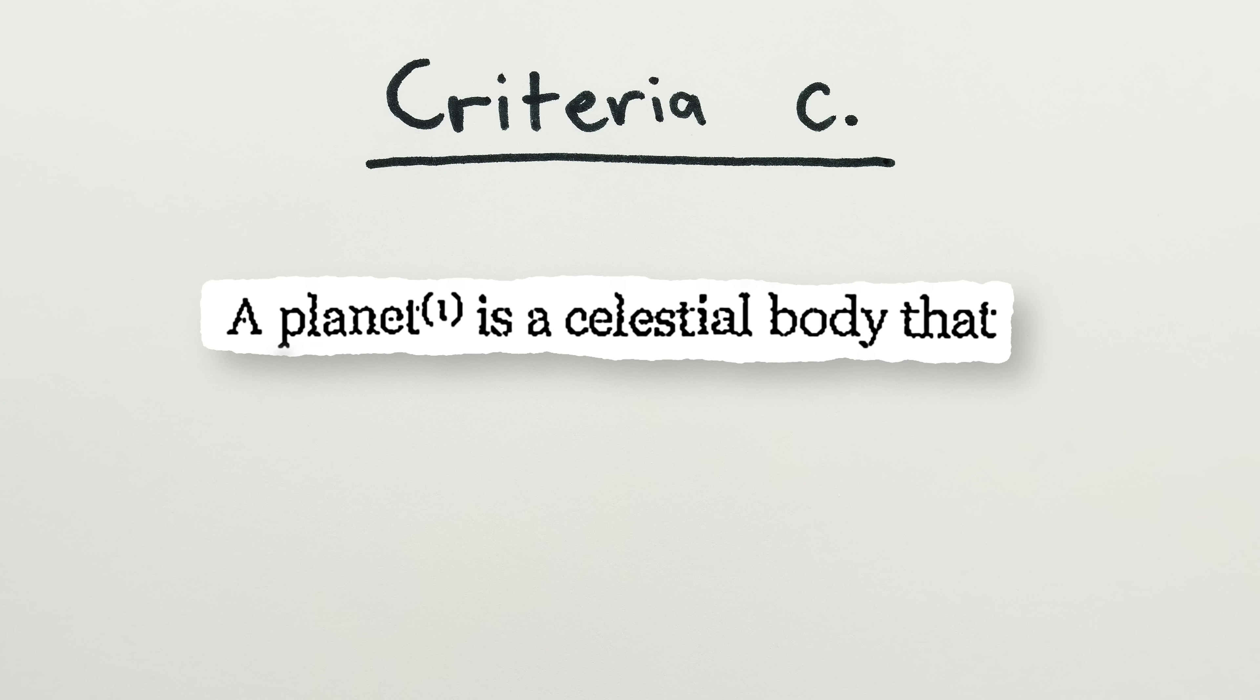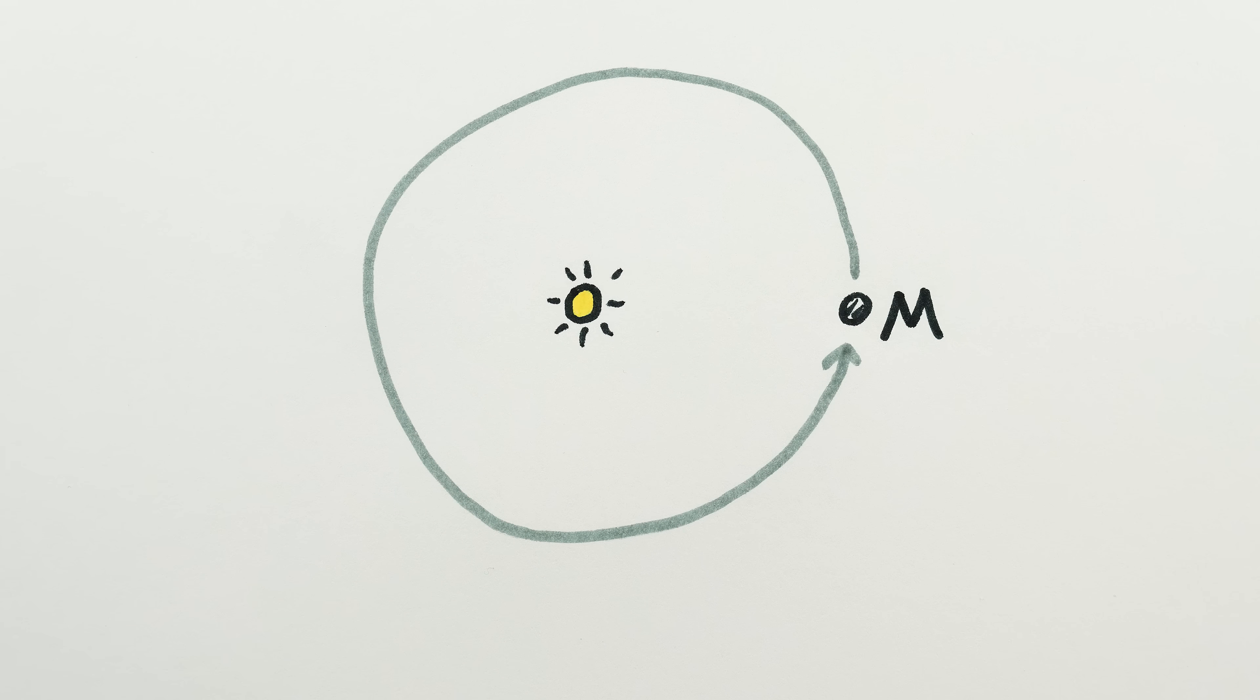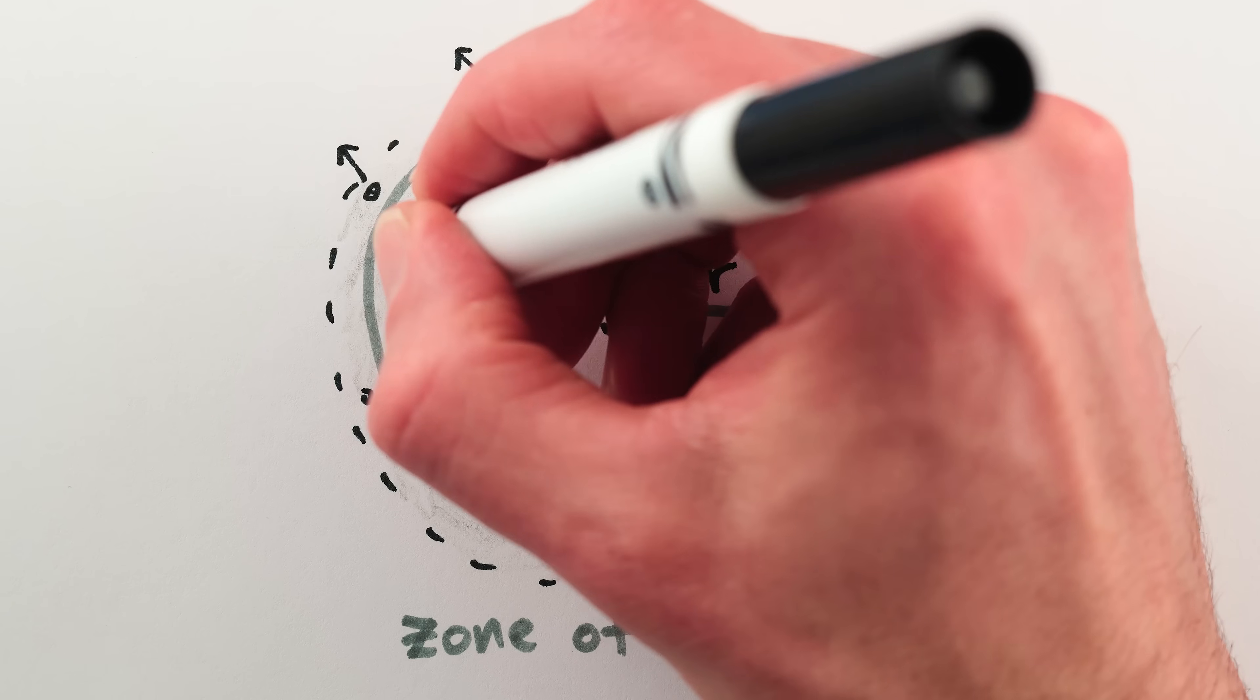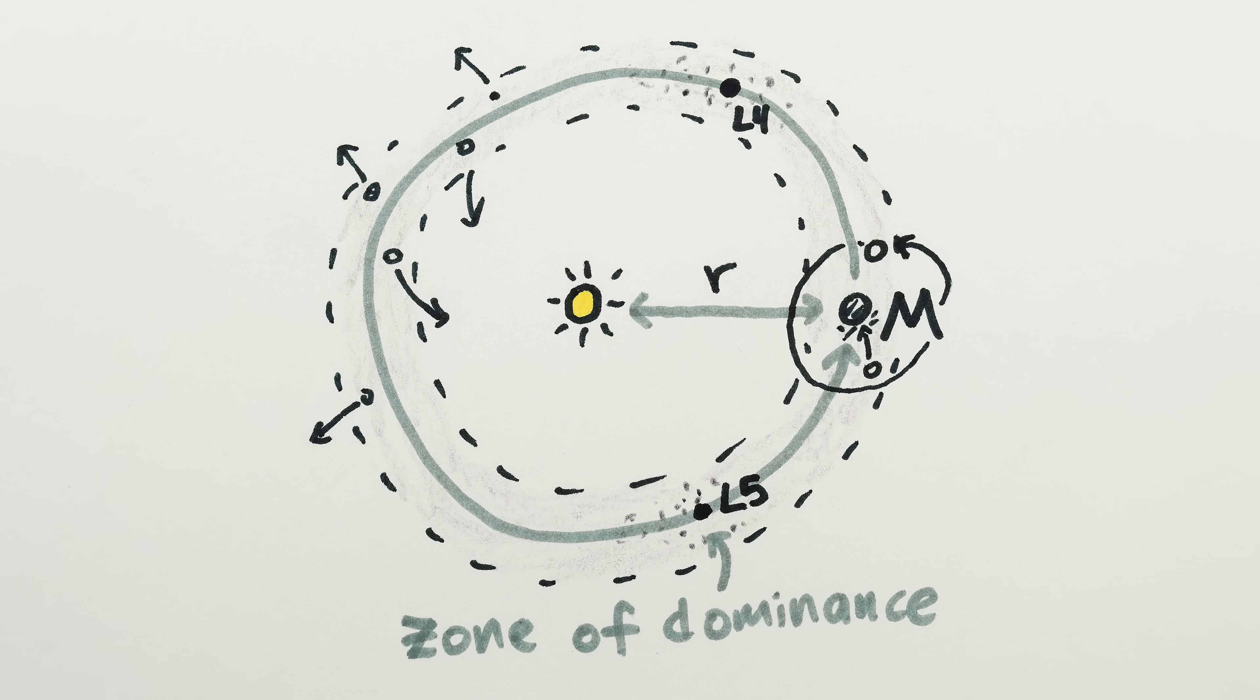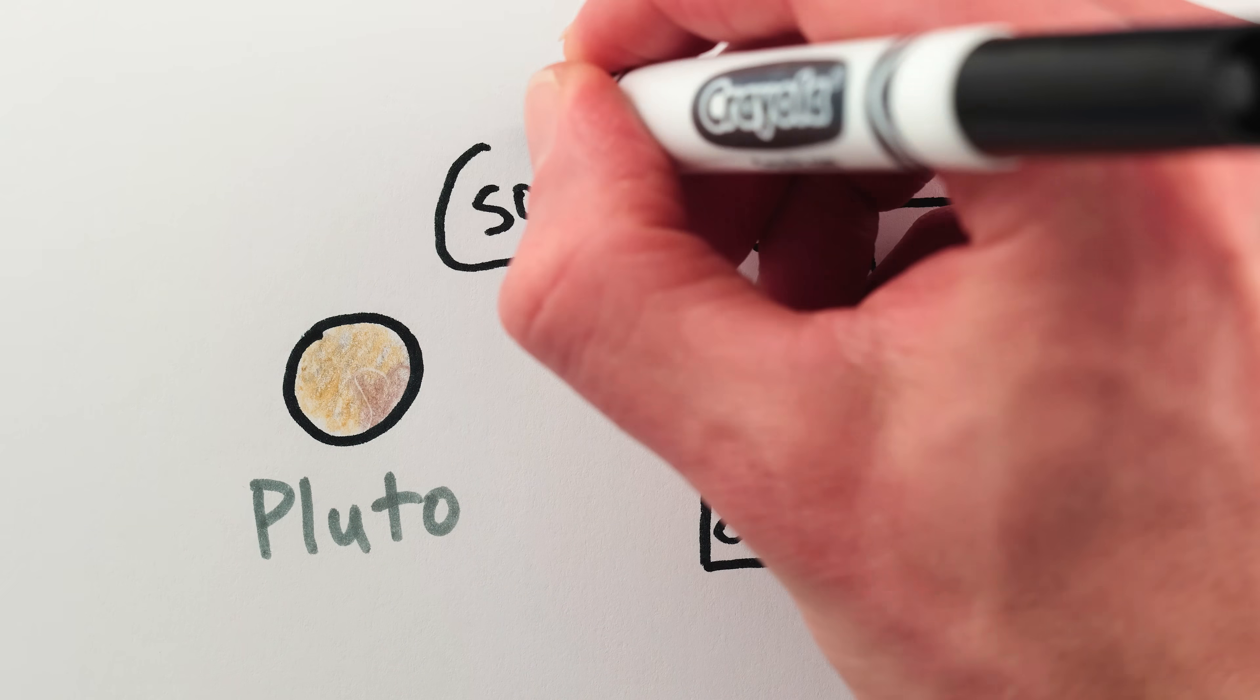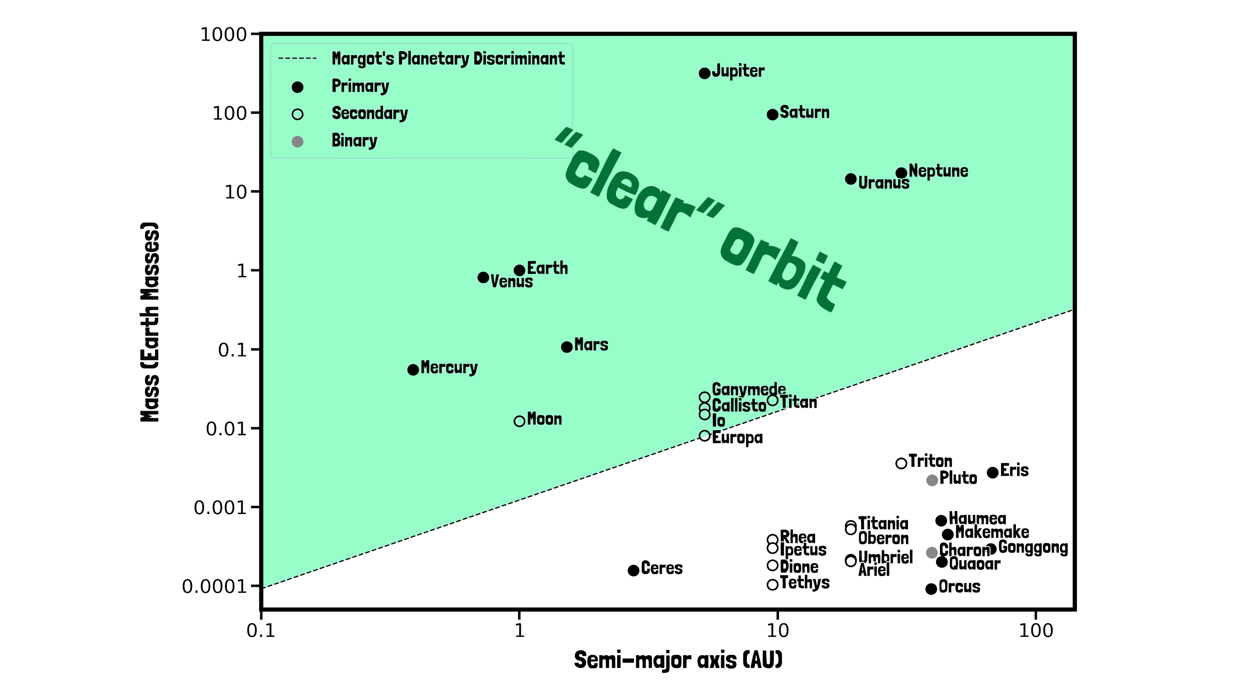So we come to criteria C. A planet is a celestial body that has cleared the neighborhood around its orbit. This criteria is asking for a planet to have enough mass relative to its orbital radius that it gravitationally dominates everything nearby. A planet should either kick other things out of its orbit, or control their motion within it, like by capturing them as a moon or as a Trojan asteroid, or pulling them to crash into the planet itself. This third criteria is the one that disqualifies Pluto from the IAU's blessing as a planet. Here's a plot of the masses of various objects in our solar system and the distances of their orbits from the Sun.